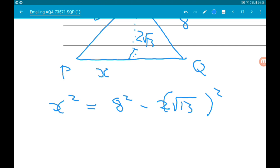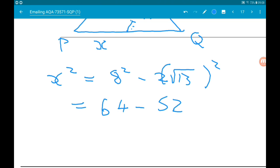So X squared is 64 minus - well we know that 2 root 13 was root 52. So if we square that we've got 52. So X squared is 12.